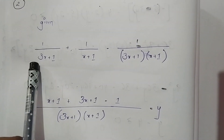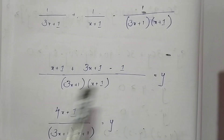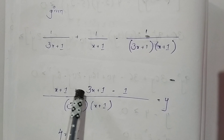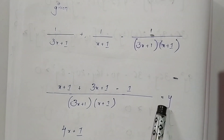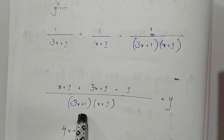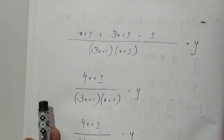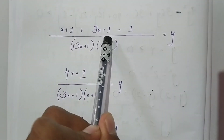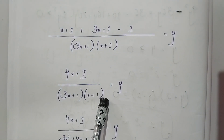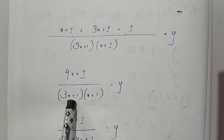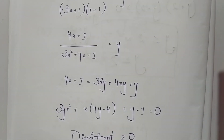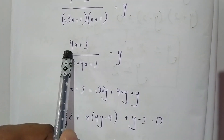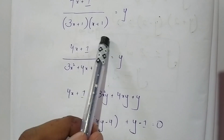This is the given expression. First, equate this to y and take LCM. On taking LCM here, we will get x+1 and from this we will get 3x+1, and minus 1, divided by (3x+1)(x+1), is equal to y. Now x + 3x will become 4x, and 1 + 1 - 1 will become 1, divided by (3x+1)(x+1), equals y.